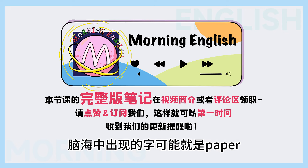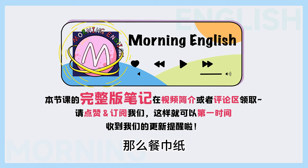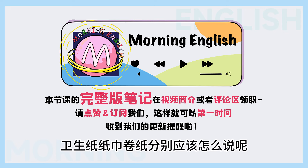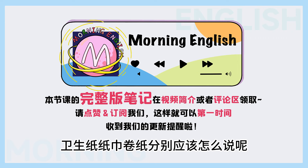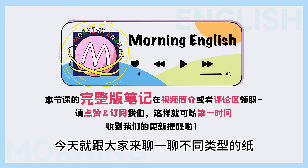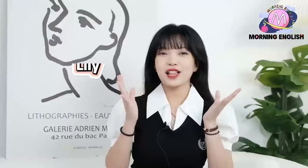一提到纸呢, 大部分的人脑海中出现的字可能就是paper。那么餐巾纸、卫生纸、纸巾、卷纸, 分别应该怎么说呢? 今天就会跟大家来聊一聊不同类型的纸。